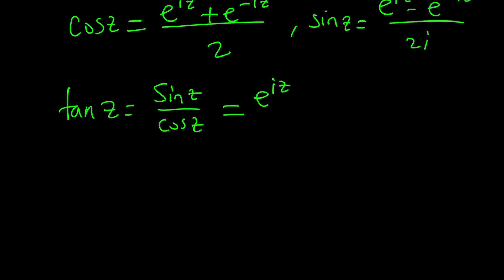So, this is sine. I'm going to divide it by cosine, which means multiply by the reciprocal of cosine, which is 2 over e to the iz plus e to the negative iz. You can cancel out the twos and that's the only thing you can cancel out.